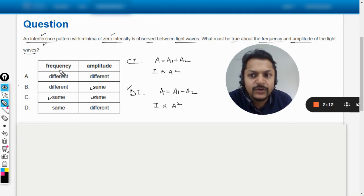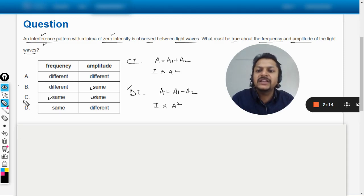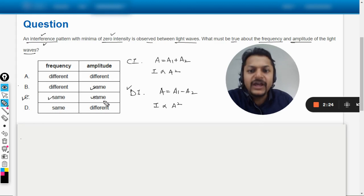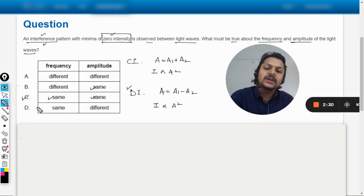Because if the frequency is not same, you're not getting a stable interference pattern. And amplitude has to be same if you want zero intensity at the dark fringe. And hence the answer will be C.